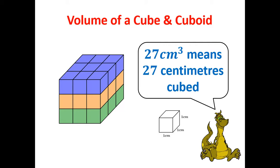If you can imagine a little cube that's 1 centimeter long, 1 centimeter wide, and 1 centimeter high, this cube on the left has 27 of these little cubes that make up the same space.